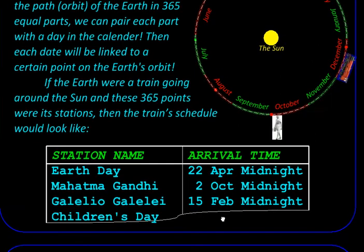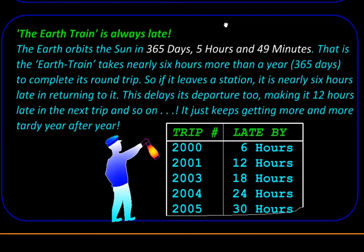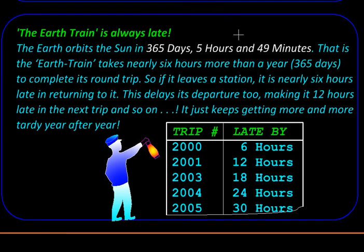Now this whole concept sounds great, but there is a problem: the train is always late. This is because Earth does not complete the round trip in 365 days, but in 365 days, 5 hours, and 49 minutes. So it leaves a station called New Year's Day on time, but it will return there 6 hours late. Naturally it would start from there 6 hours late, and therefore the next trip will be 12 hours late. These round trips are called years.